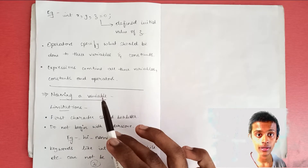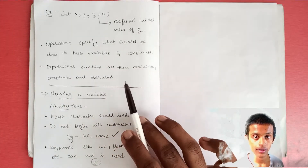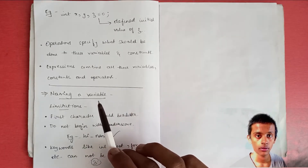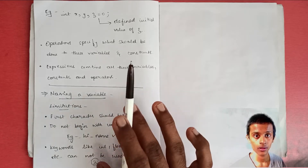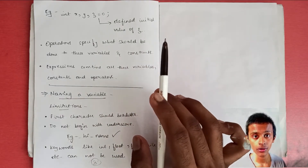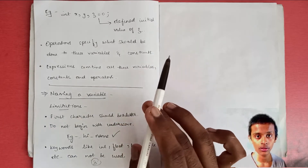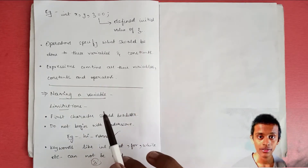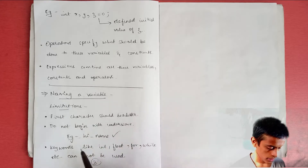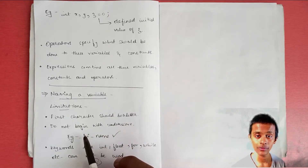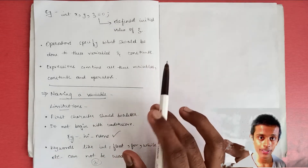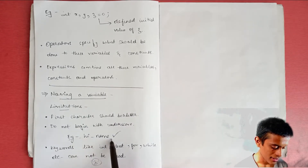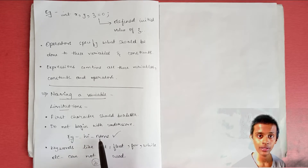Now, how do you name a variable? There are a few limitations or restrictions you should follow. The first character of the variable must be a letter — it cannot be a number. Do not begin with an underscore; it should be a letter, either lowercase or uppercase. You can include an underscore anywhere in between the name — so 'hi_name' is accepted, but '_hiname' cannot be used.